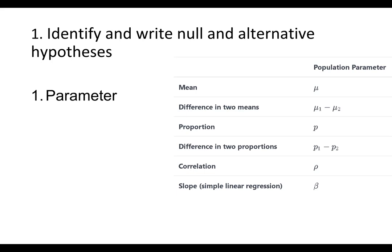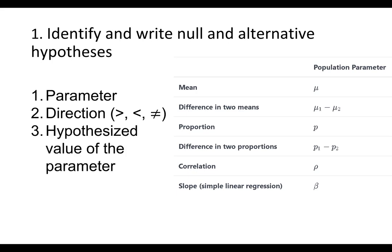For direction, the scenario will tell us if we want to know if the parameter is greater than, less than, or just different from a given value — and that determines which sign goes in our alternative hypothesis. For a single proportion or single mean, we'll be given a number in the scenario. For difference in two proportions and difference in two means, the number is usually 0, because if there is no difference between the two groups, then the difference is 0. For correlation and slope, the hypothesized parameter value is also typically 0, because if there is no relationship between the two variables, the correlation will be 0 and the slope would be 0.